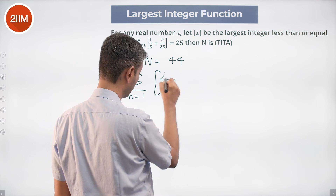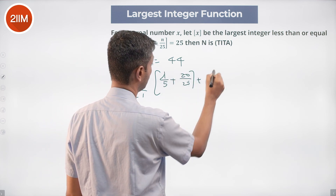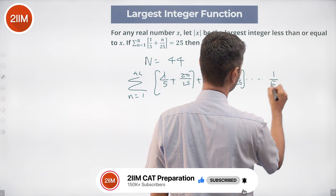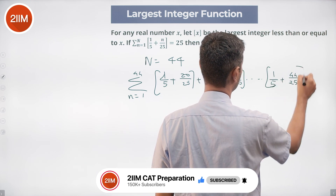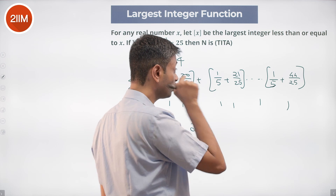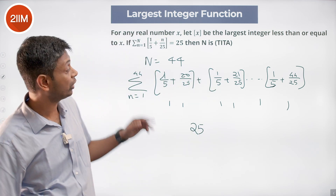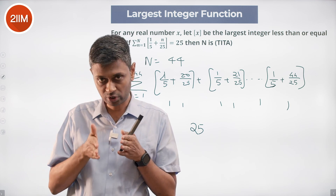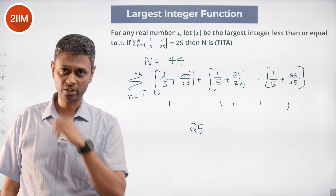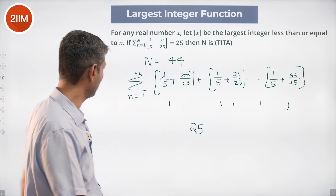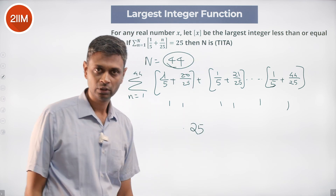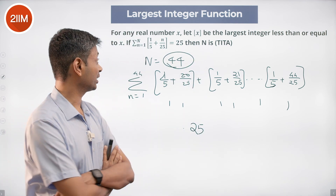floor(1/5 + 20/25), floor(1/5 + 21/25) — all of these give 1. How many terms are there? 25 terms (from n=20 to n=44). If I put N=45, it goes to 2. So when N equals 44, the summation equals 25. N is 44 — beautiful question.